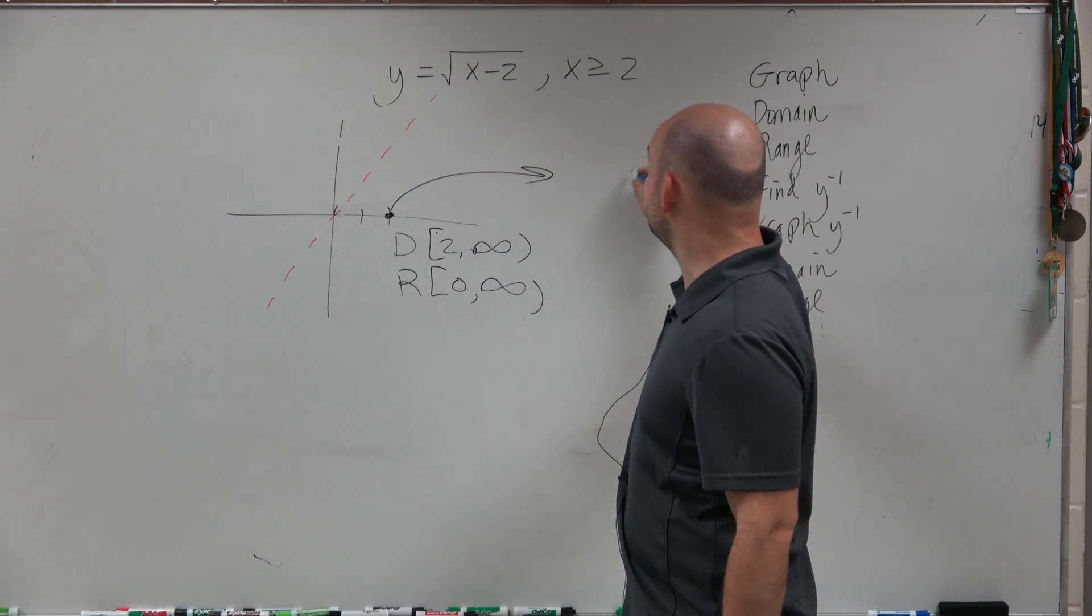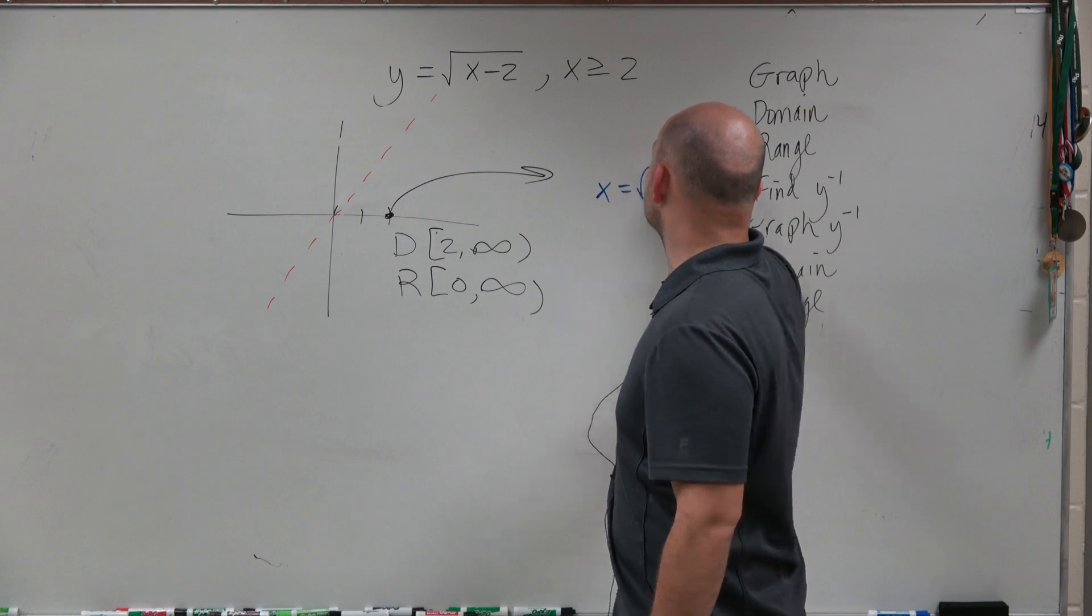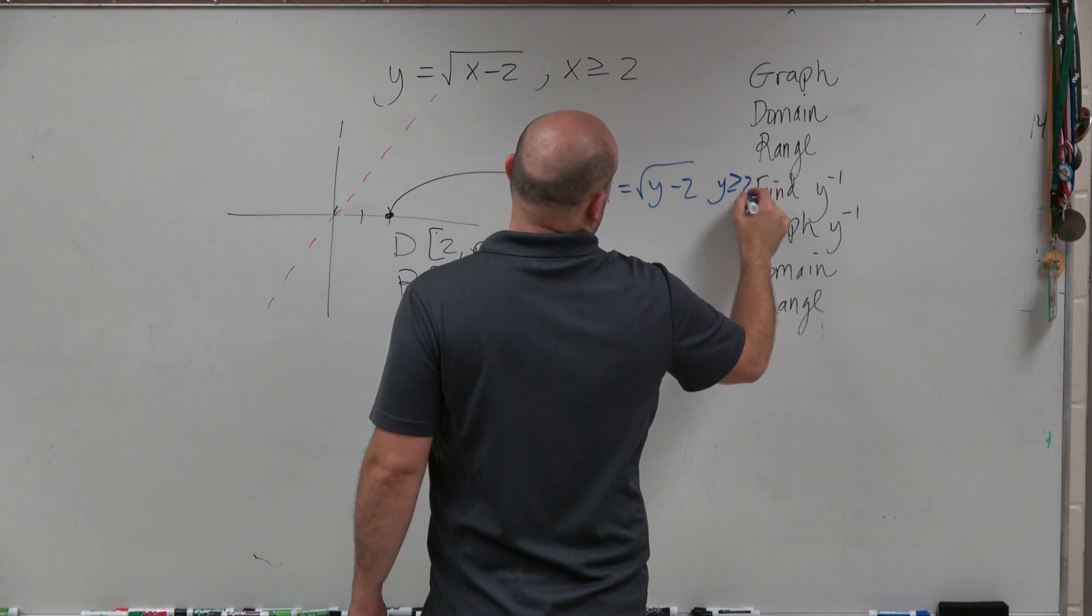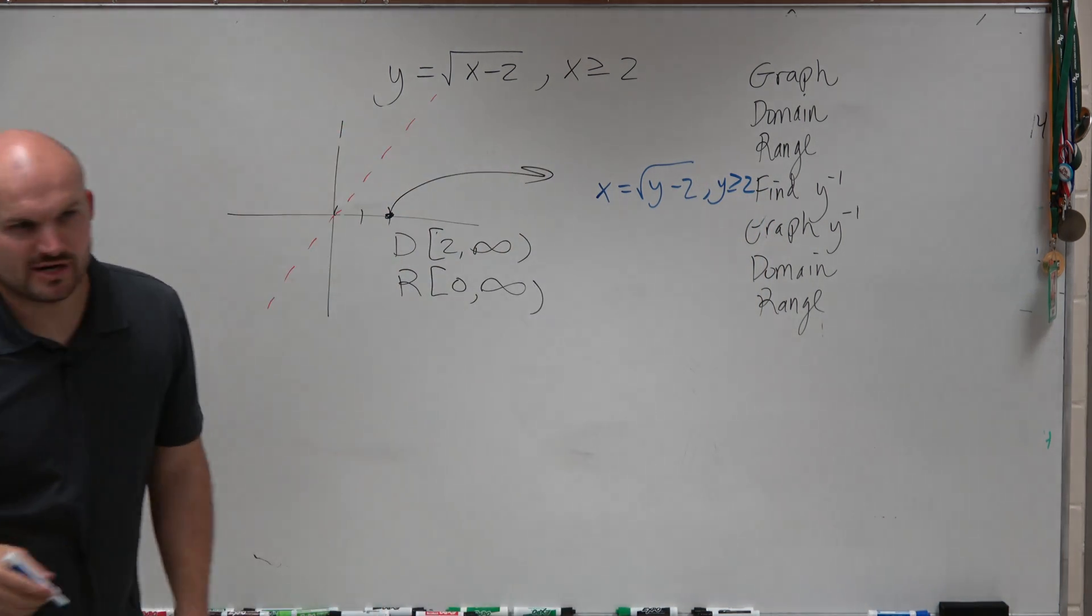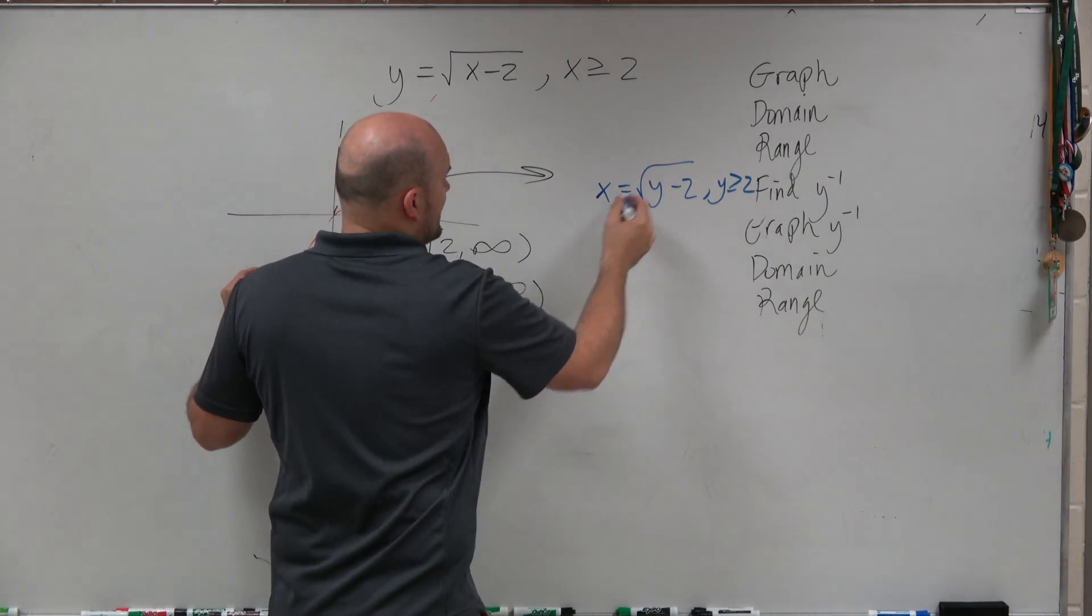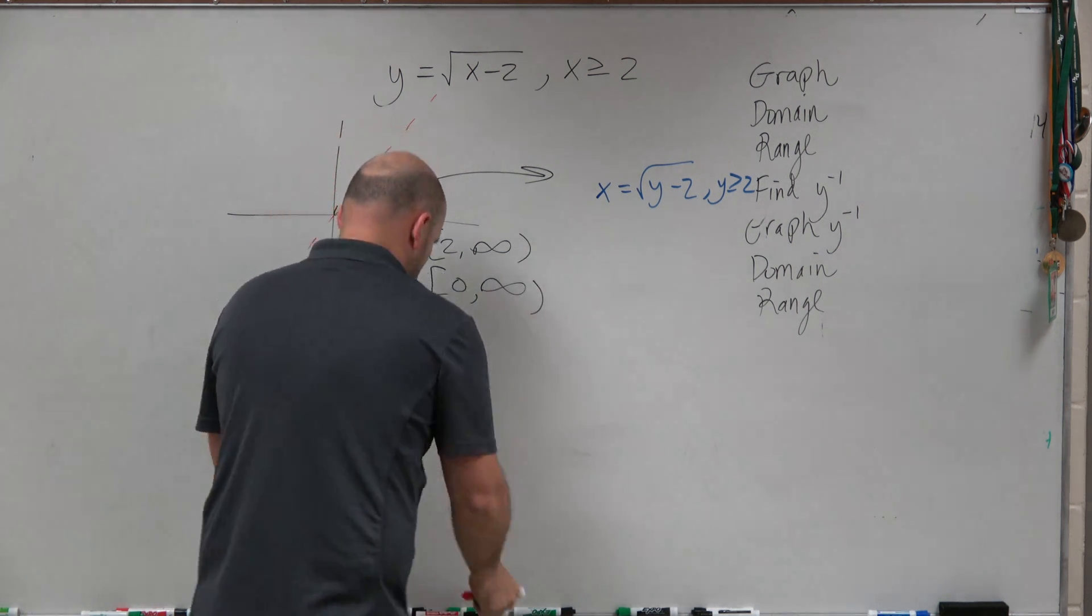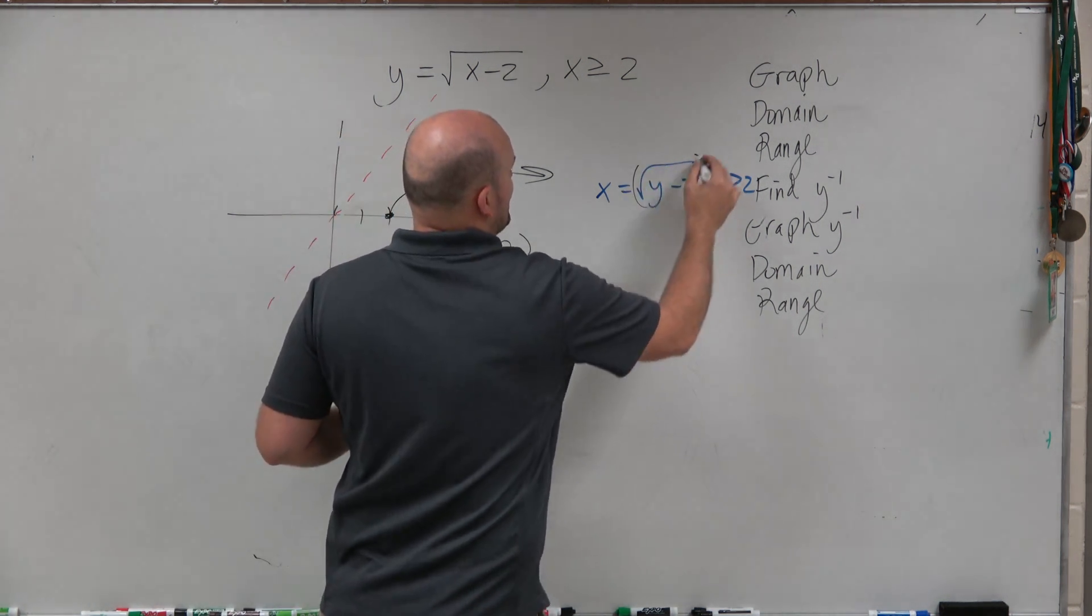So remember to algebraically find the inverse. First, you swap your x and your y's. I'll swap my constraint as well. Then I basically solve for y. I've got to undo the square root, so I'll square both sides.